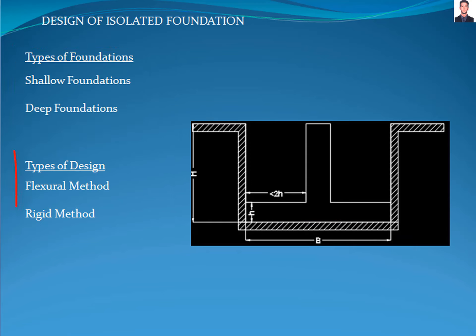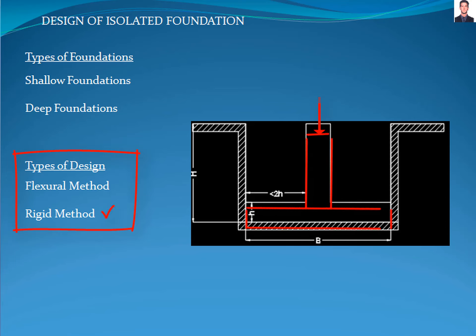There are two ways to design a foundation: the flexural method or the rigid method, depending on the type of foundation. The flexural foundation is which is capable to develop flexion or bending curvature, and the rigid method is considered when the settlement is flat or the bending curvature is zero, assumed to occur when the distance from the face of the pedestal or column to the edge of the foundation is less than two times the height of the footing.